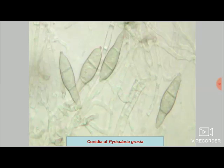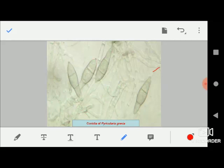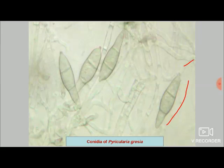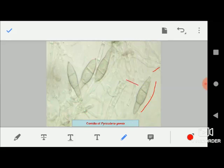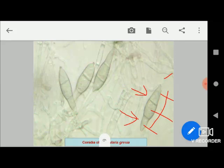In the picture, we can see clearly the spores of Pyricularia — these are called conidia. The conidia are pyriform to obclavate, or somewhat top-shaped, attached at the broader base by a hilum. The conidia are hyaline to pale olive-green in color. They have two septations — three-cell structures — as can be seen clearly.